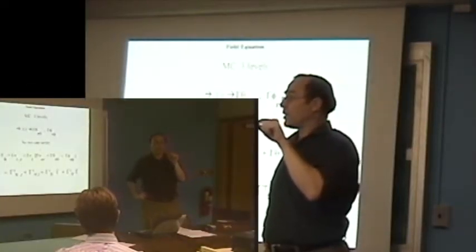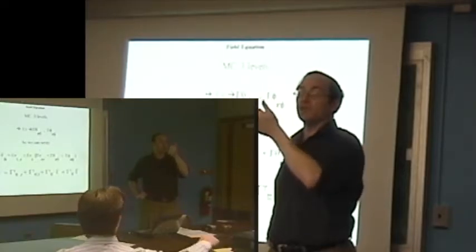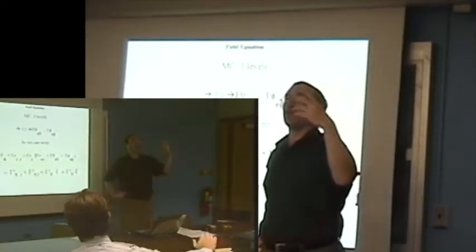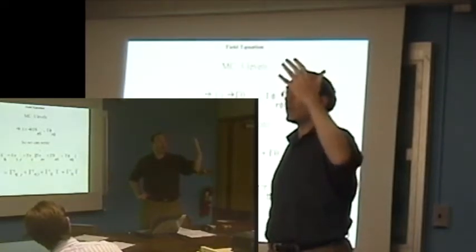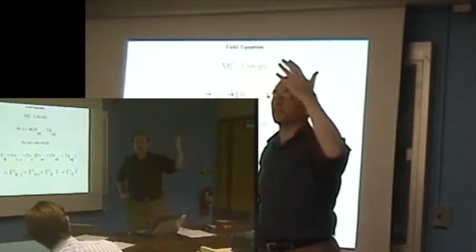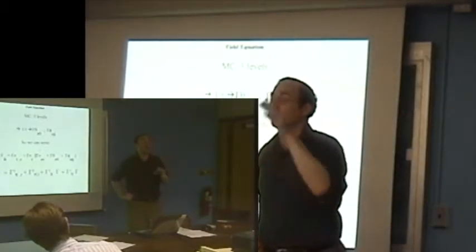Phi, which is the potential, is also this function in front of dt squared. We're going to call it either phi or g_tt. It's the same thing. In its guise as a Newtonian gravitational potential, it's phi. In its guise as the coefficient in front of dt squared, we'll call it g_tt. But they're the same thing.